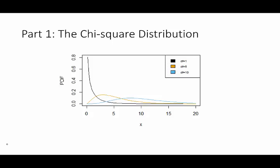One can see that with degrees of freedom equal 1 — I just want you to have these pictures in your head — the chi-square distribution has somewhat of an exponential shape to it, whereas as we increase the degrees of freedom from 1 to 5 and 5 to 10, you can see that we start to develop peaks in our distribution and these peaks start to move to the right.